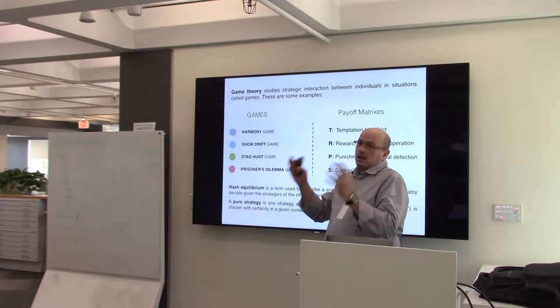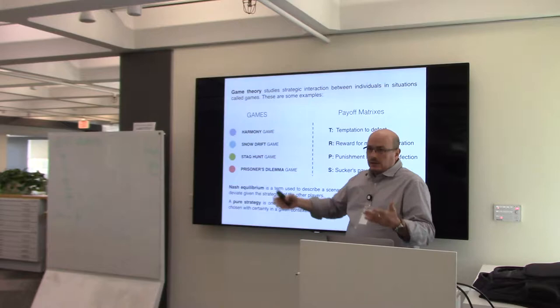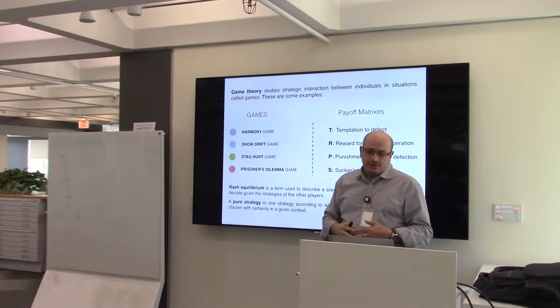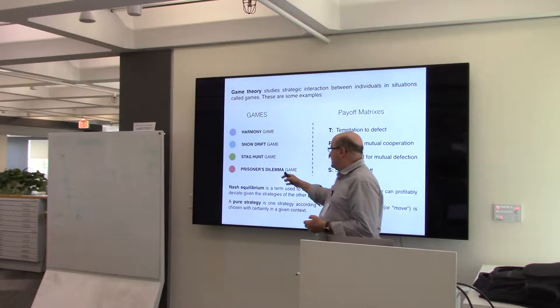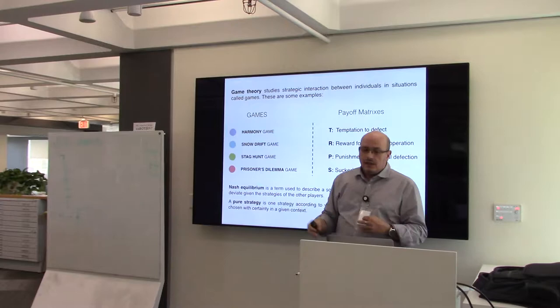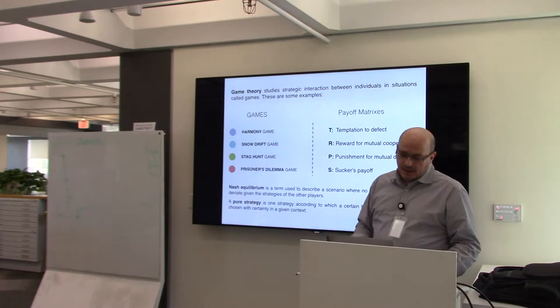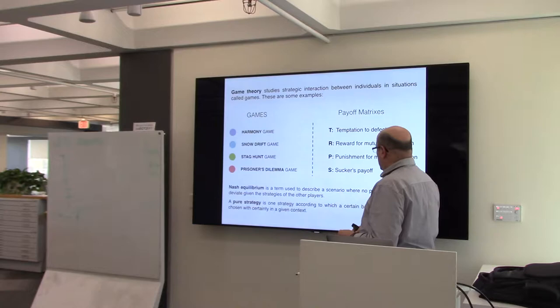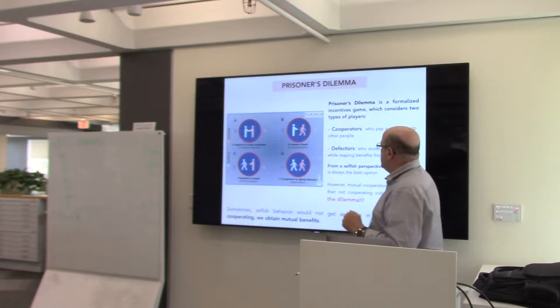There are two actions available for players. Depending on the ordering of entries in the payoff matrix, you have different games: Harmony, which favors cooperation, and the most famous one, the Prisoner's Dilemma, in which the survival of cooperation is most difficult. If you can explain why cooperation survives in the Prisoner's Dilemma, then it should be no problem to explain all other orderings. You can also study Nash equilibria — a lot of different things that game theorists and mathematicians do — but I want to focus more on the experimental aspects.